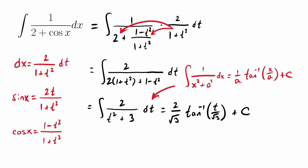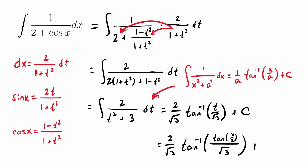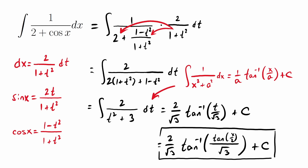We can recognize that as our basic integral formula, using a equals square root of 3. The antiderivative comes out to be 2 divided by square root of 3, times inverse tangent of t divided by square root of 3. The rest is just converting t back in terms of x using our Weierstrass substitution where t equals tangent of x over 2. So we get a somewhat messy answer: inverse tangent with tangent of x over 2 inside and a factor of square root of 3 in the denominator. That is the simplest example of Weierstrass substitution, illustrating the conversion of dx, cosine of x, and sine of x, all in terms of t.